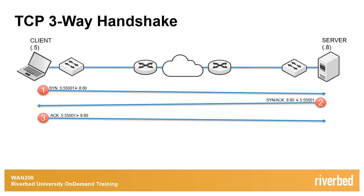In this initial SYN, the IP addressing properties contain the client source and server destination. Further, the TCP addressing properties contain a client ephemeral source port, randomized for uniqueness as described in RFC 793, and the default service port for the HTTP protocol, port 80.